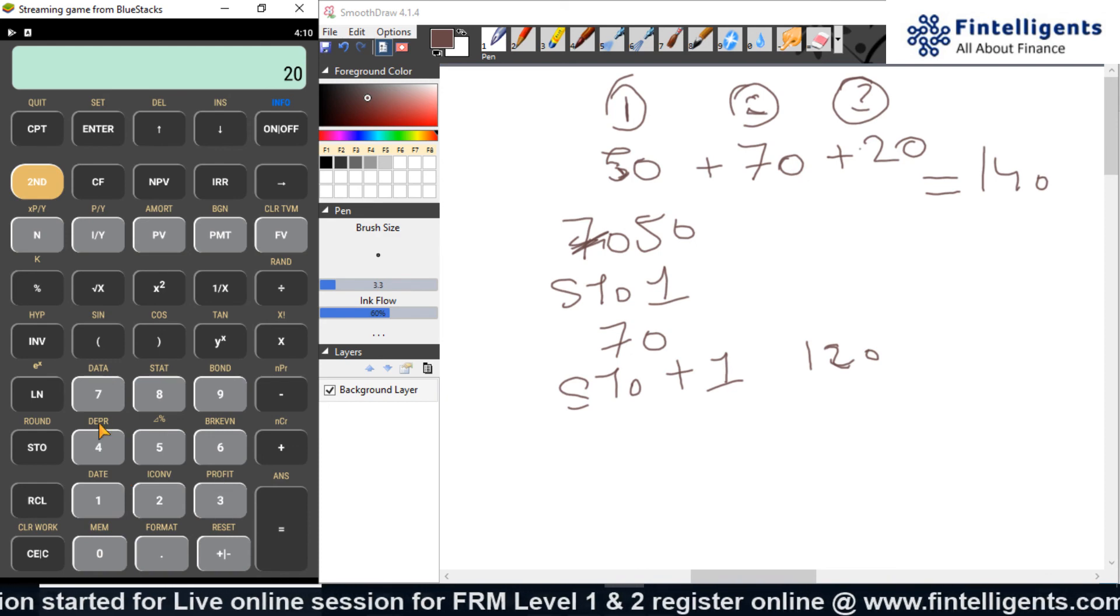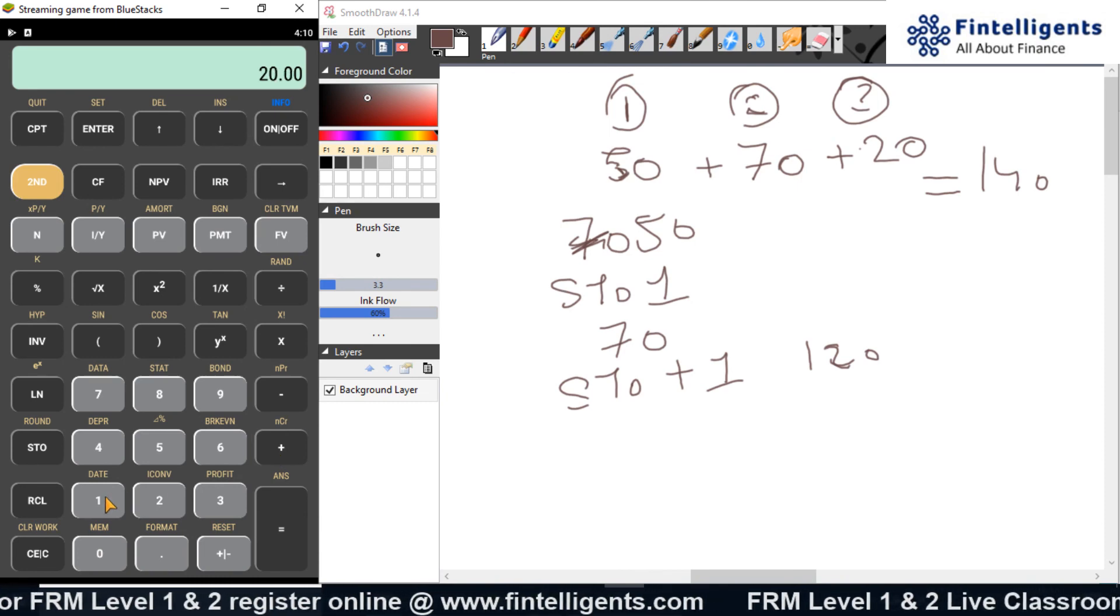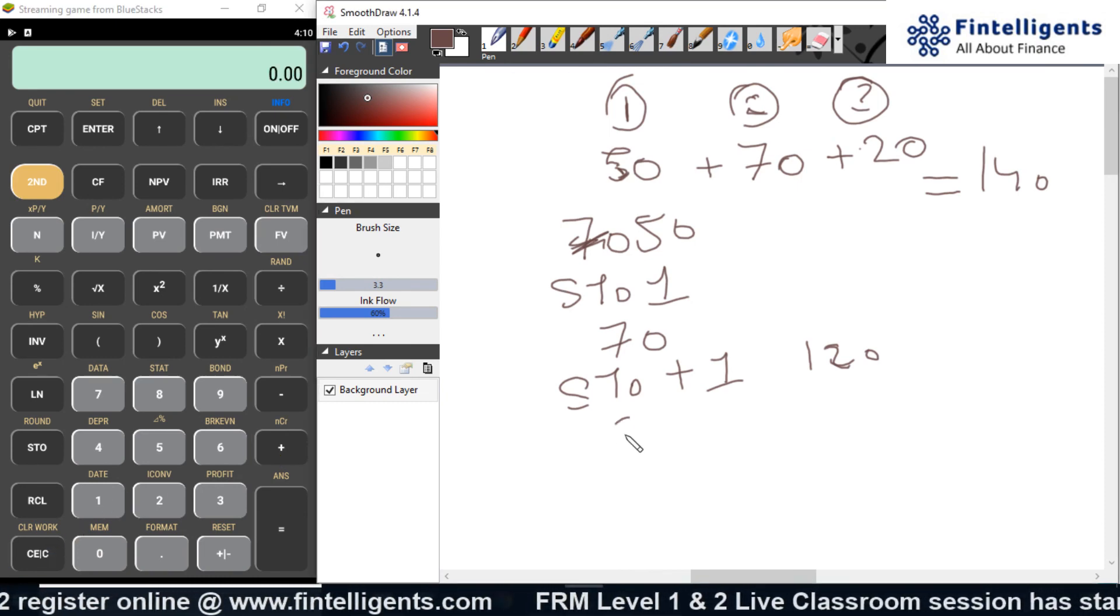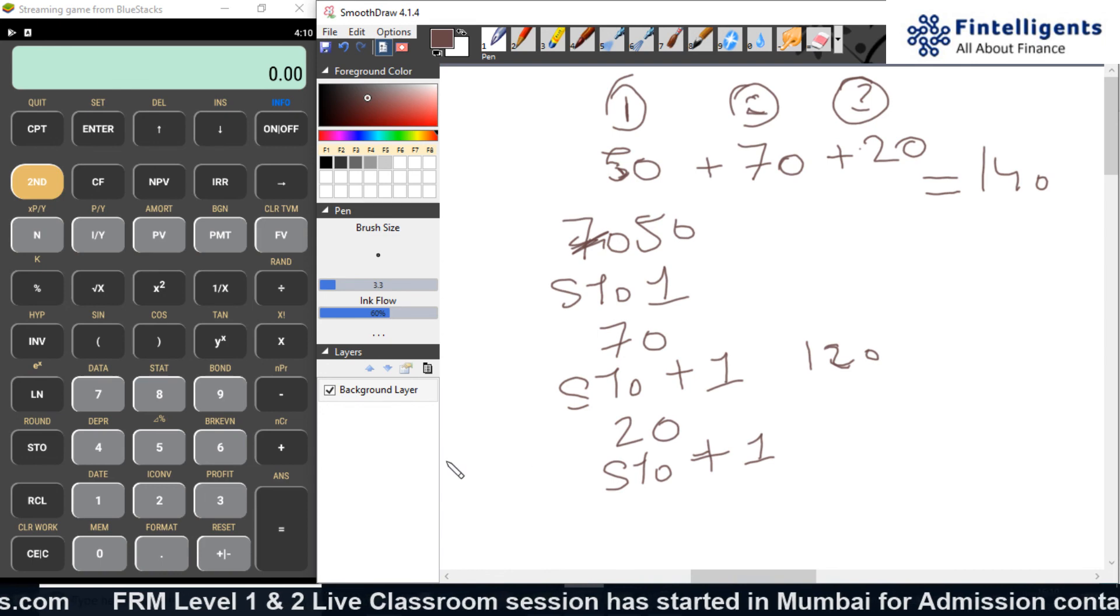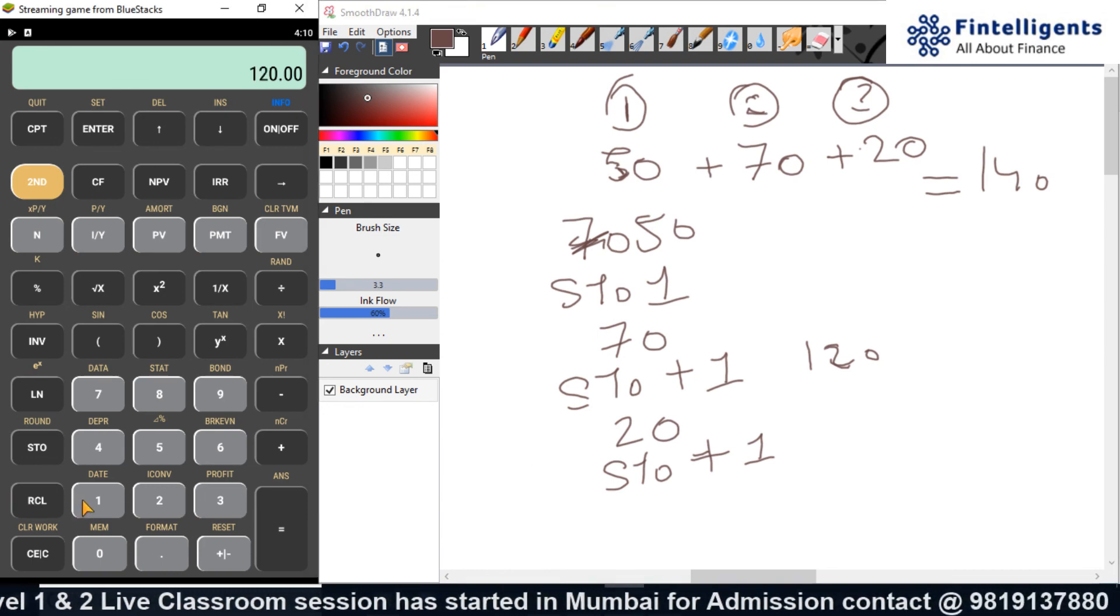And I want to store that again to the number 1 which is already stored value. I will go to STO plus 1. So, I inputted 20. STO plus 1. And I recall what is now stored in 1.